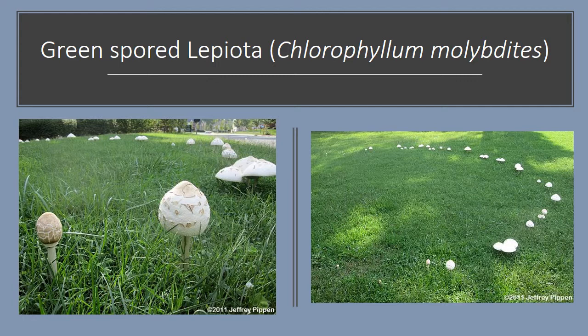A basidiomycete native to Durham, North Carolina is the green-spored Lepiota, unique for producing what's called a fairy ring. The mycelium underground is concentrated in the center of the circle, and the fungus sends up its basidiocarps in a ring pattern to disperse spores. When you see these rings in Durham, you'll recognize them — though be aware that this mushroom is poisonous and should not be eaten.